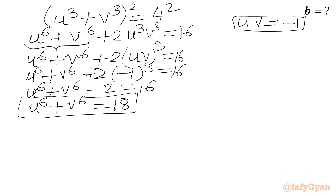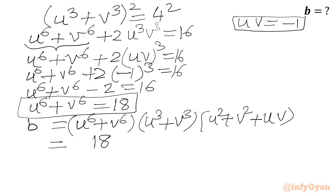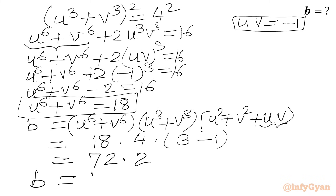We are ready to calculate b. Substituting all values: b = (u⁶ + v⁶)(u³ + v³)(u² + v² + uv) = 18 × 4 × (3 + (−1)) = 18 × 4 × 2 = 144. So the value of b is 144. This is our final answer.